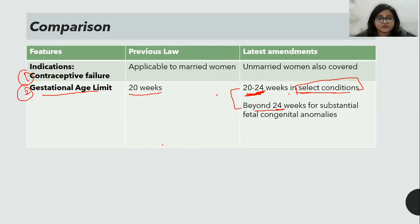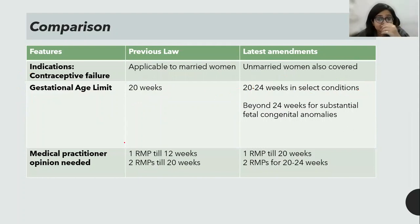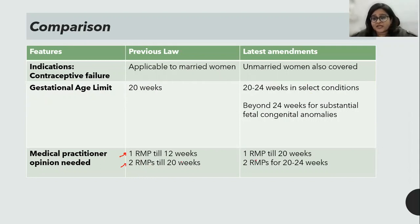To recap: the first major change is contraceptive failure now applicable to unmarried women also. The second major change is the upper limit is now 24 weeks for select conditions, and beyond 24 weeks there is no upper limit for fetal anomalies. The third major change: previously one RMP opinion was required up to 12 weeks and two RMPs for up to 20 weeks. Now it's one RMP up to 20 weeks and two RMPs for 20 to 24 weeks.